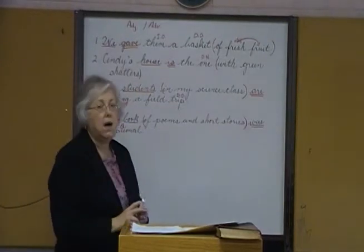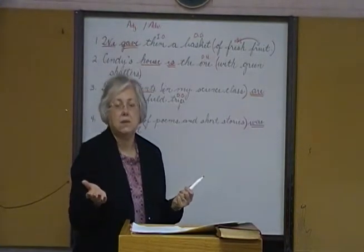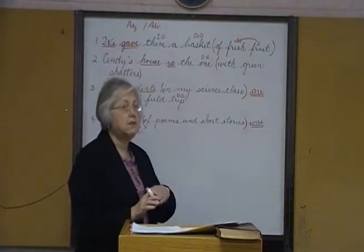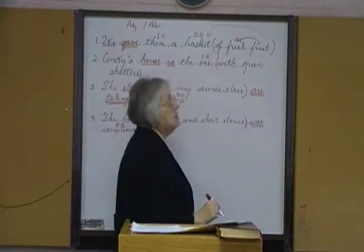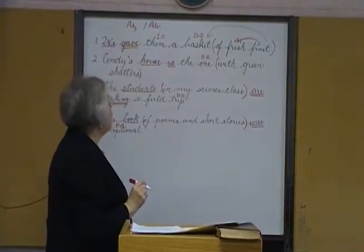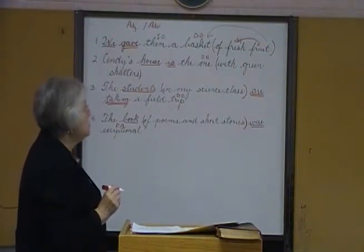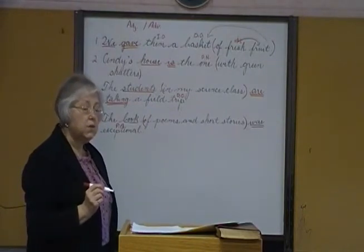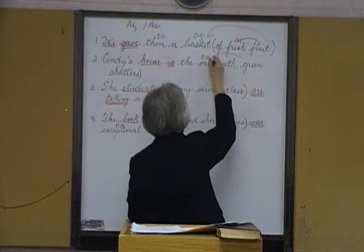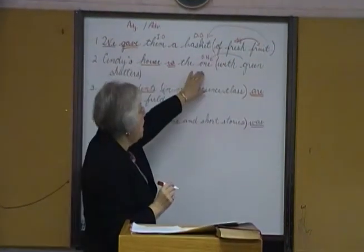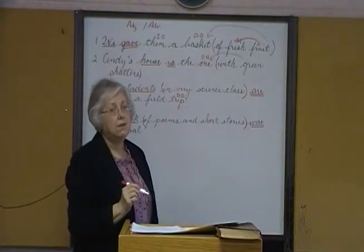The first thing I want to take a look at is the adjective prepositional phrase. Number one: 'We gave them a basket of fresh fruit.' The prepositional phrase is 'of fresh fruit.' It answers the question 'what kind of basket?' — so we have an adjective prepositional phrase following the noun it describes. As a whole unit, it's describing 'basket.' Number two: 'Cindy's house is the one with green shutters.' 'With green shutters' is describing the predicate nominative 'one.' As a whole unit, the adjective prepositional phrase is modifying 'one,' and in turn 'one' is identifying 'house.'